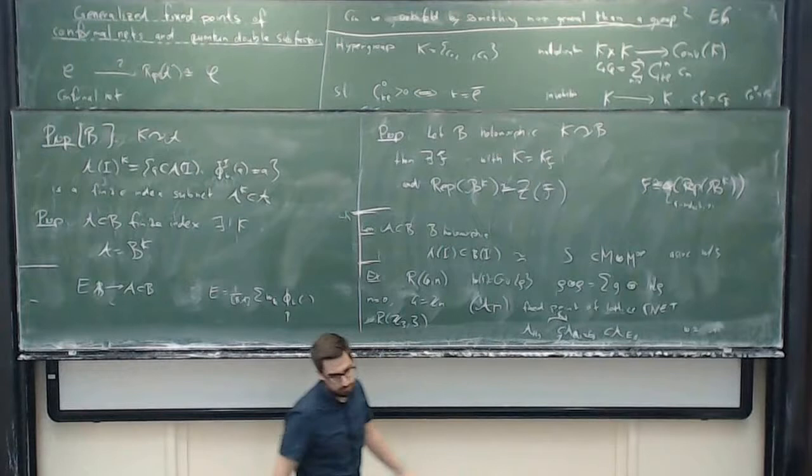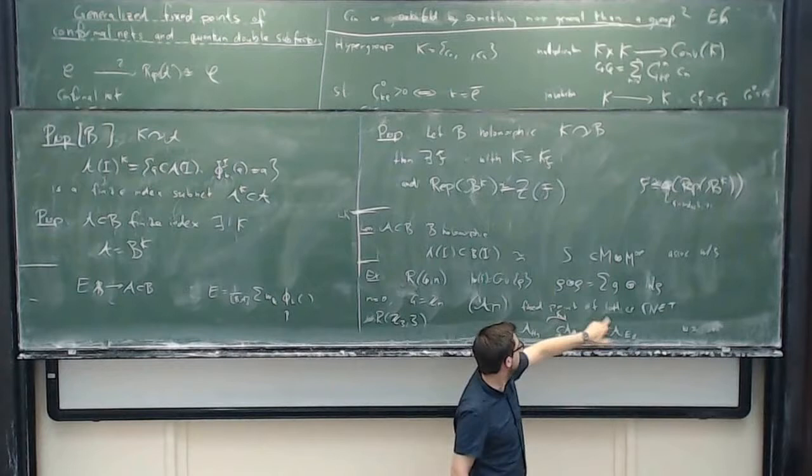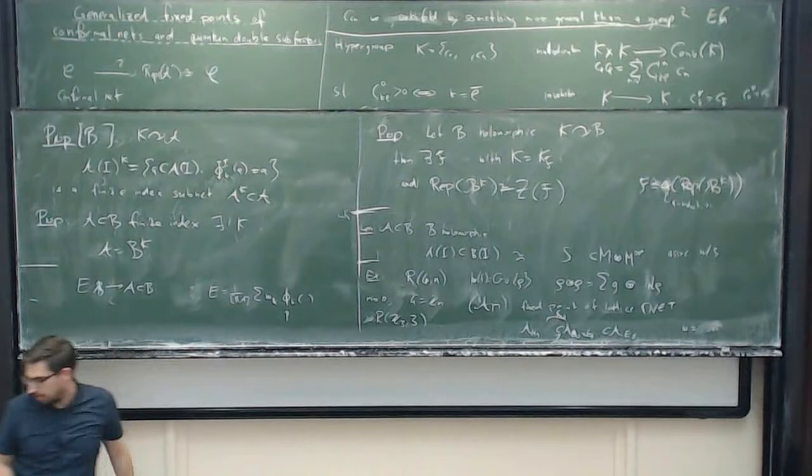If it exists, it would come in two steps: first you take a Z/3Z fixed point, then you take this hypergroup fixed point with the even part. So let me stop here. Thank you for attending.